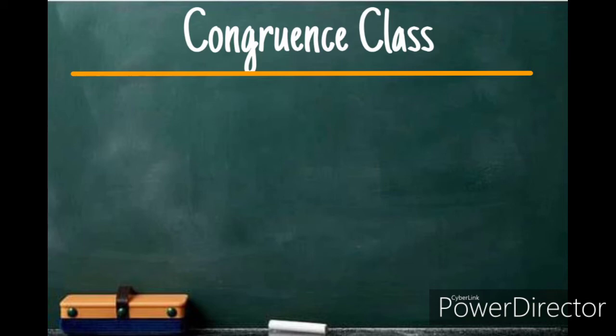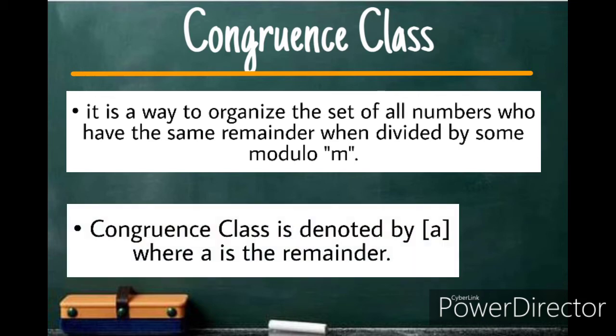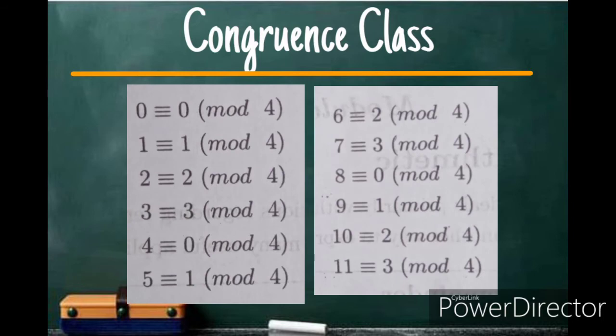Another topic that we're going to tackle in Modular Arithmetic is the congruence class. It is a way to organize the set of all numbers who have the same remainder when divided by some modulo m. We denote a congruence class as a where a is the remainder. Now, let's take a look at the numbers 0 to 11 and what they are congruent to in Modulo 4.